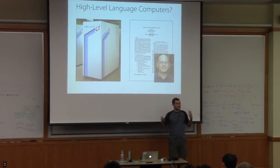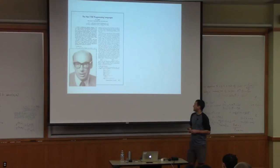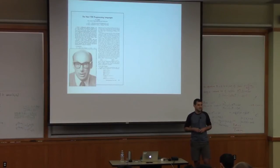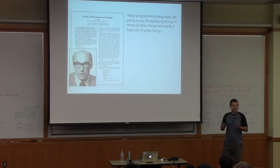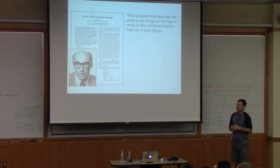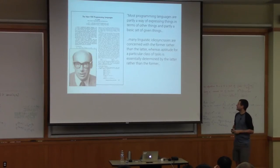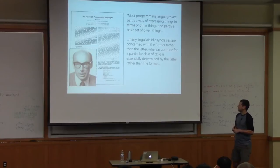Around the same time as these intense debates about high-level versus low-level languages, along came Peter Landin, who wrote a paper called 'The Next 700 Programming Languages,' which laid out one of the foundations of modern functional languages. He starts by saying: 'Most programming languages are partly a way of expressing things in terms of other things and partly a basic set of given things. Many linguistic idiosyncrasies are concerned with the former rather than the latter, whereas aptitude for a particular class of tasks is essentially determined by the latter rather than the former.'